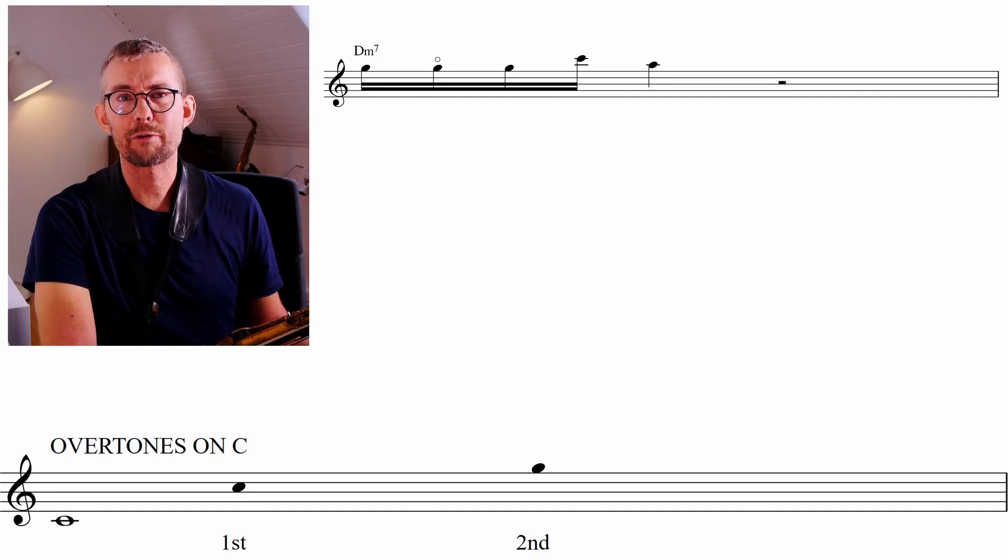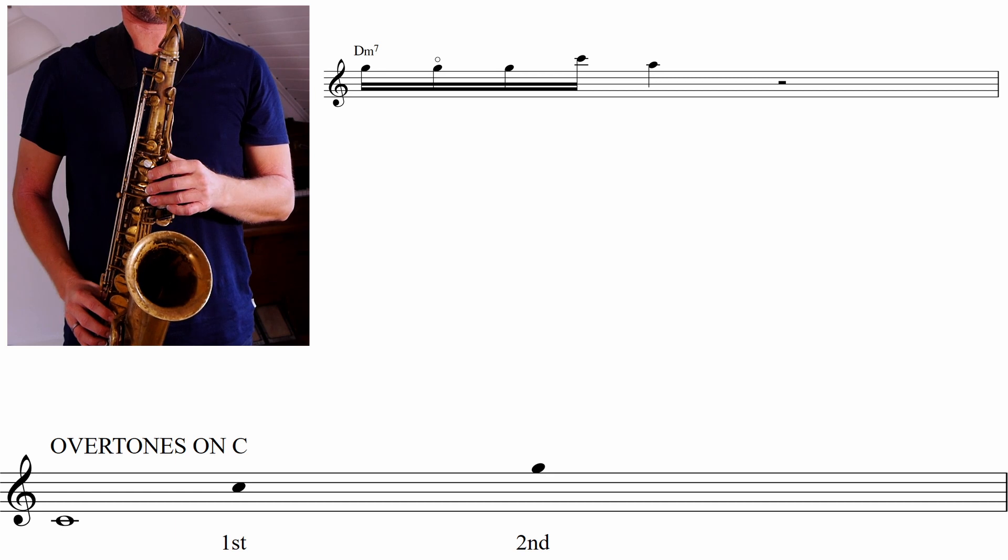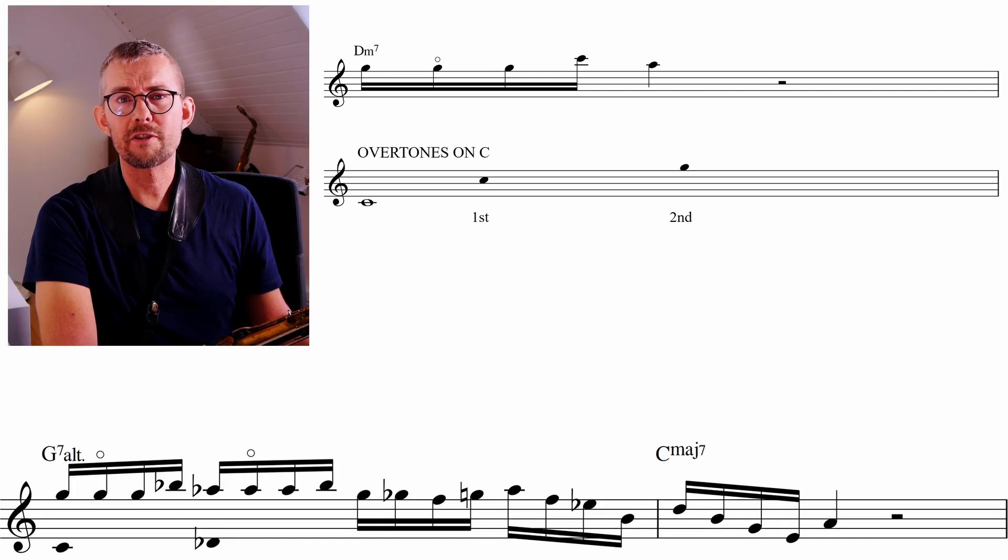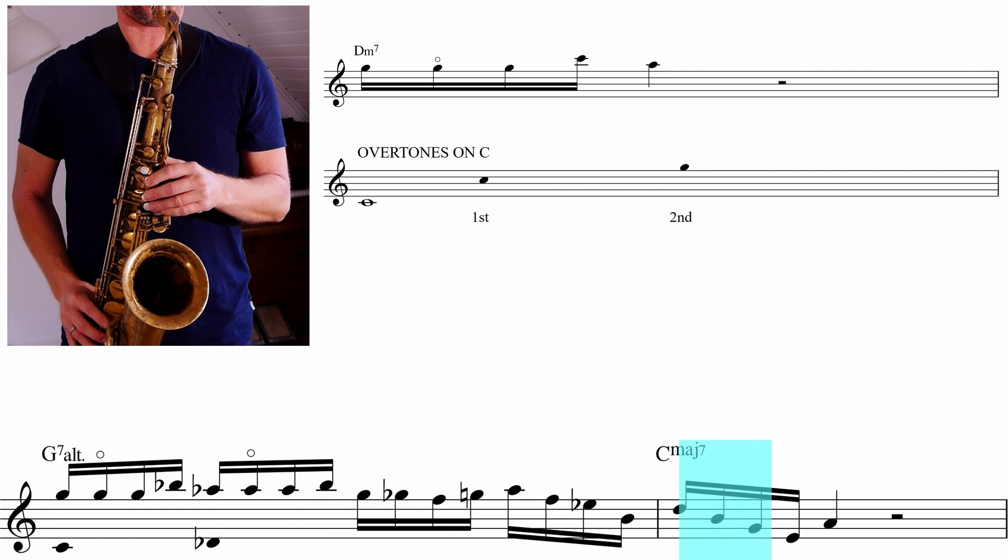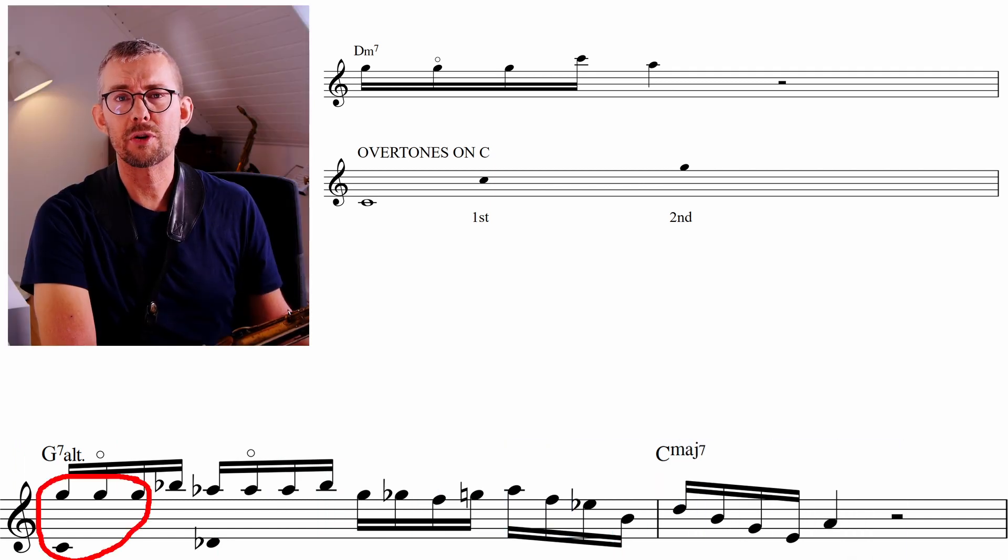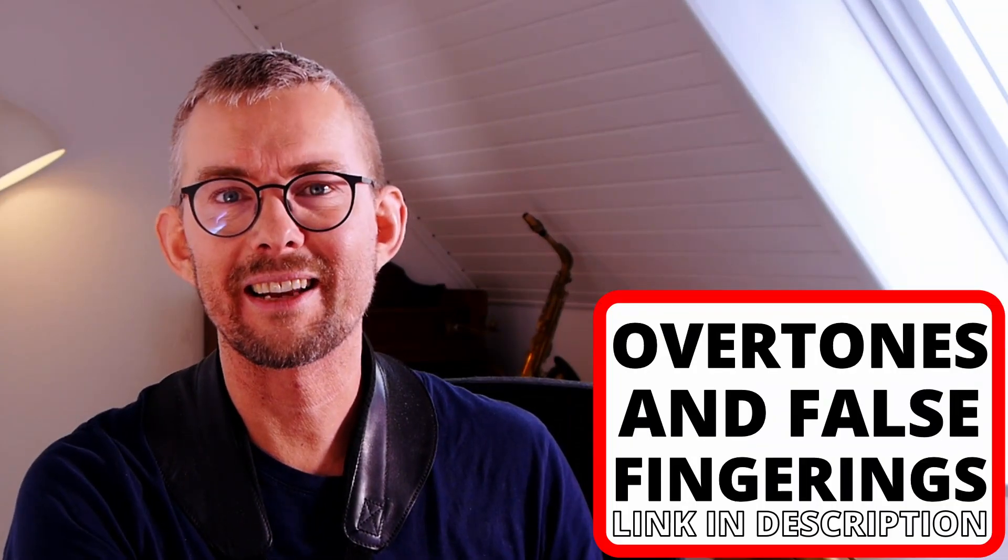One of the techniques he used in his playing was false fingering and overtones. Michael Brecker interchanges the overtones with the real tone in many of his licks, like in this lick where I play the G and the overtone G of the C, and the Ab interchanged with the overtone Ab of the Db. Learn much more about overtones, check the link in the description.